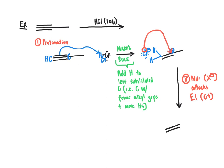We draw out the product: a CH2 group at the left-hand end, a methyl group coming off the former alkyne carbon, and our newly added chlorine atom. This is the product resulting from addition of one equivalent of HCl across a carbon-carbon triple bond — giving us an alkene substituted with a halogen atom. We follow Markovnikov's rule, so this reaction is definitely regioselective: we had two possible positions for the proton and preferentially chose the less substituted carbon.